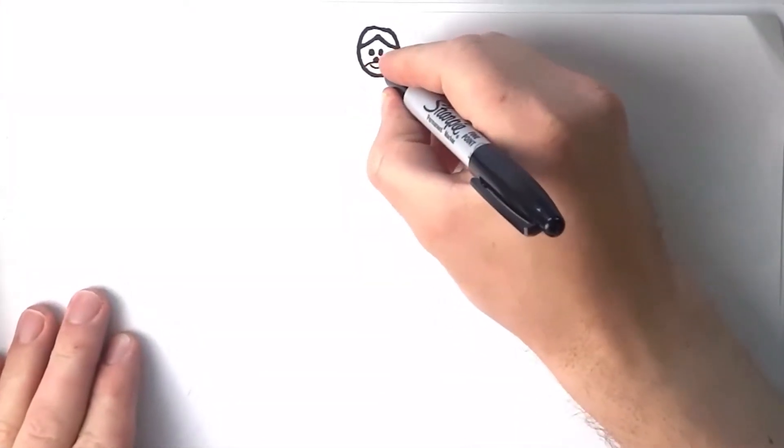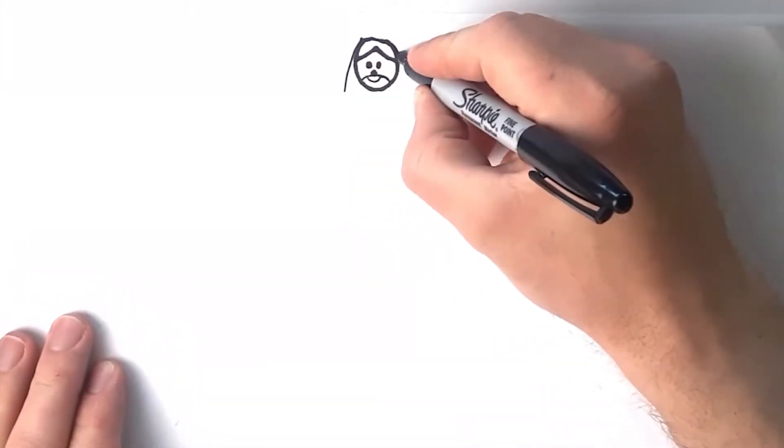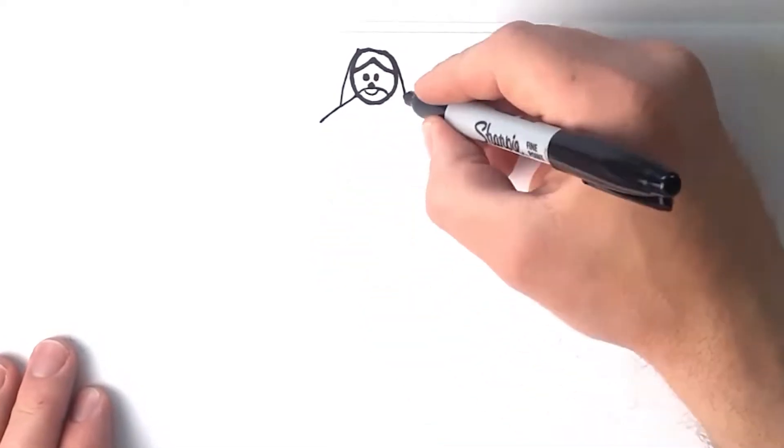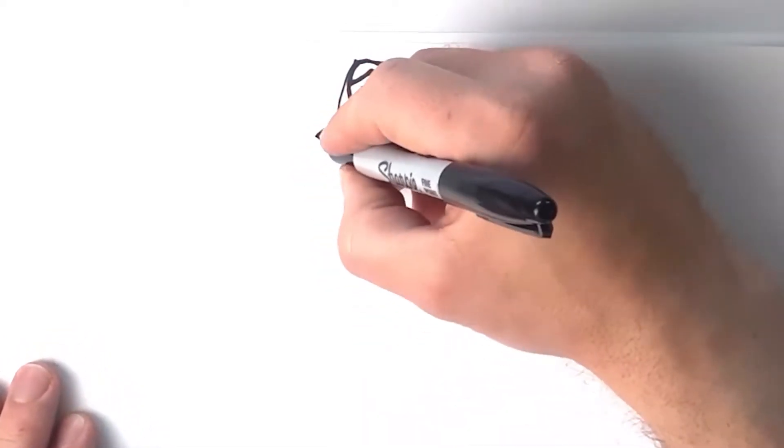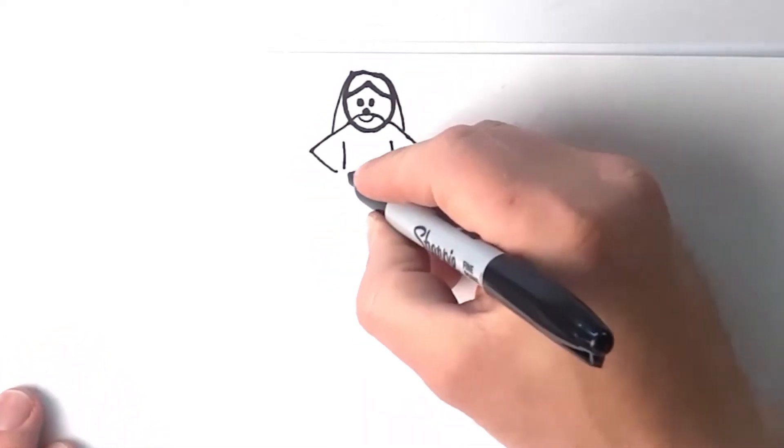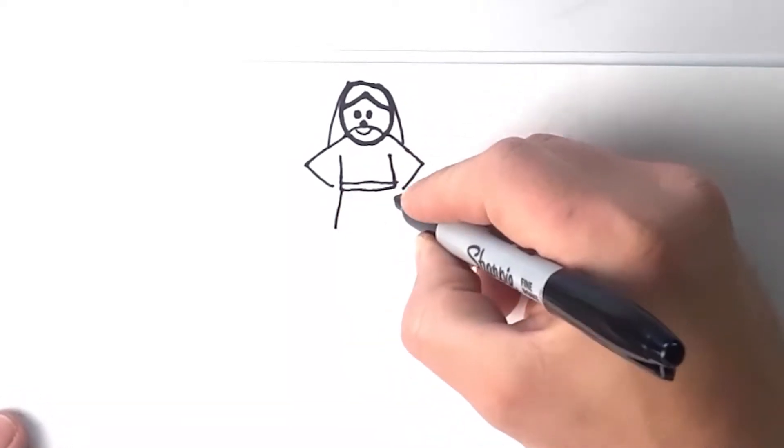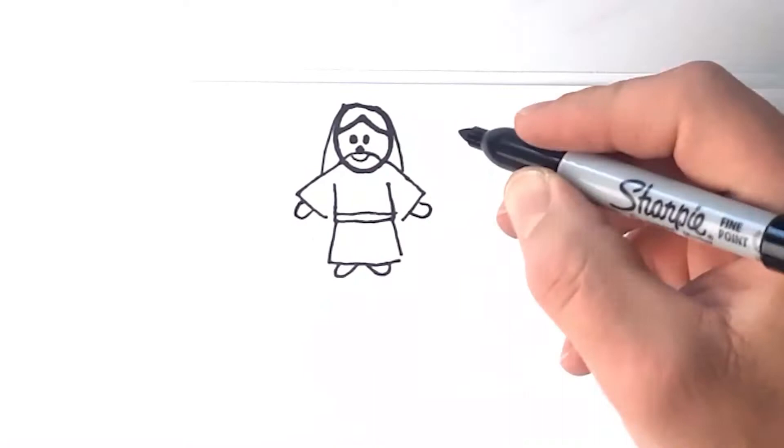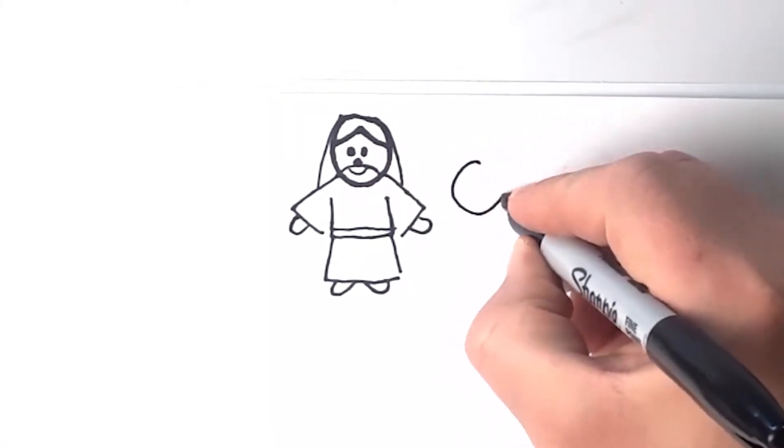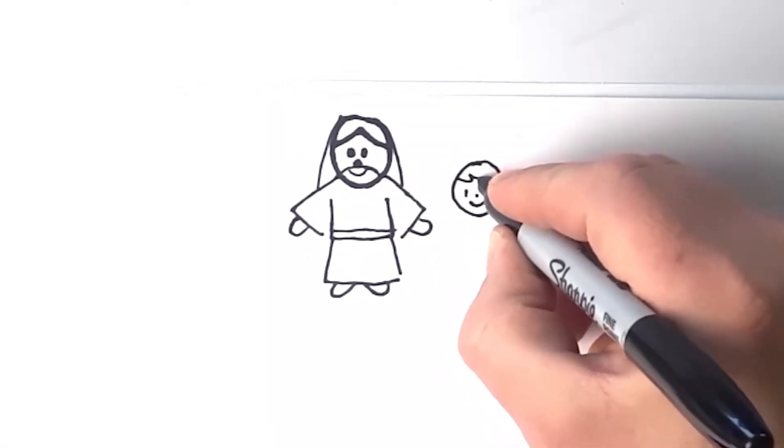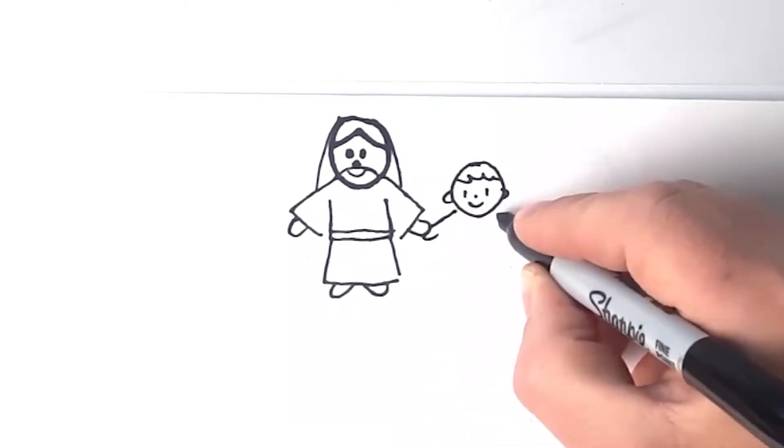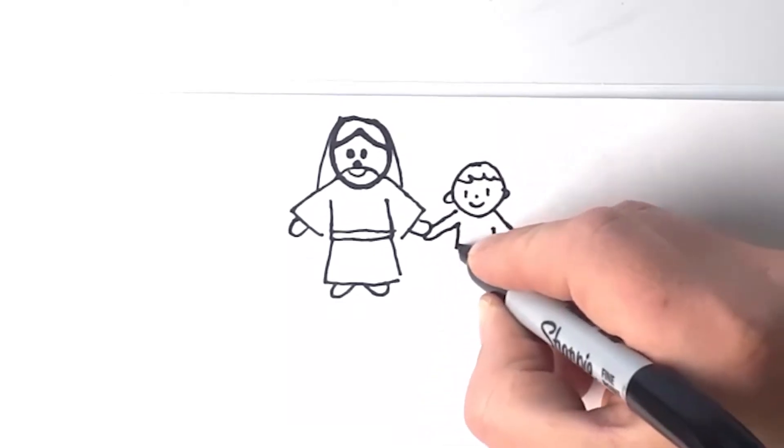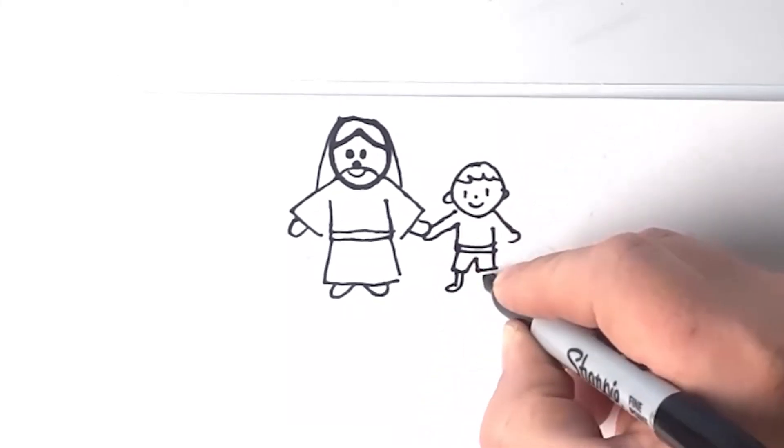So why did Jesus die for us? That's something that we're going to answer in this lesson. You've heard about Jesus Christ. You've heard that he came and he suffered on the cross. He died for us. But why did he die? Jesus died so that he could help us live forever and be happy forever. That's pretty cool, isn't it?